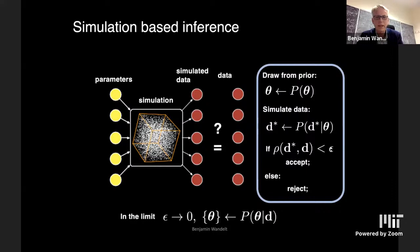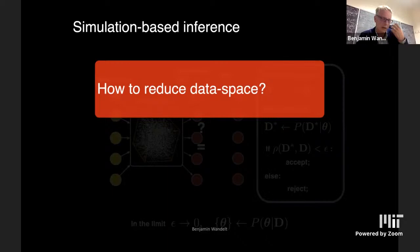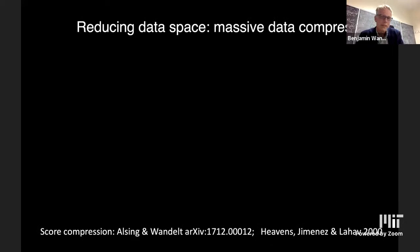This is not a particularly practical approach, as you can imagine. If you have a billion galaxies, even just 10 million galaxies, if you want all of the galaxies in your simulation to end up exactly in the same positions as the ones in your survey, you're going to be simulating for a very long time. So you need to somehow dimensionally reduce the data space. We're going to be back at summaries again, but there's a little twist to it.